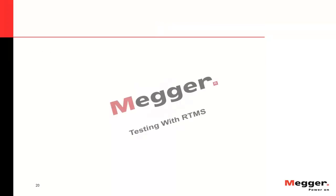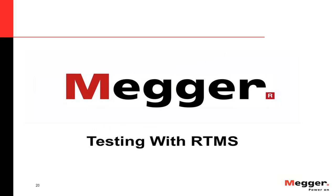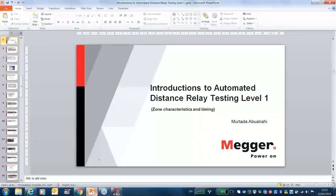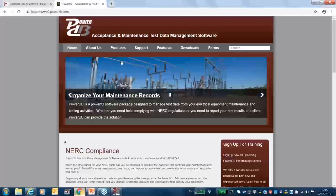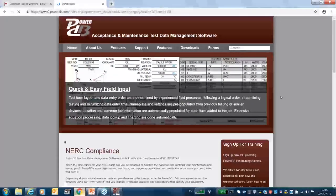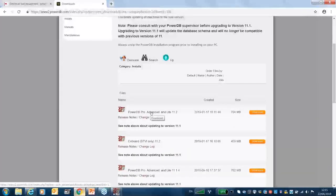We have a lot of equipment: the Freja series, SMRT series, and the DLRO 900 series. Today's topic, since it is automated testing, will use the Freja and SMRT software called RTMS. The software can be downloaded from powerdb.com — go to the downloads area and you will see the latest version of PowerDB. This is free of charge with the light version, and you can operate with all devices and run simulations. It is also available on the Megger website after you register and log in.